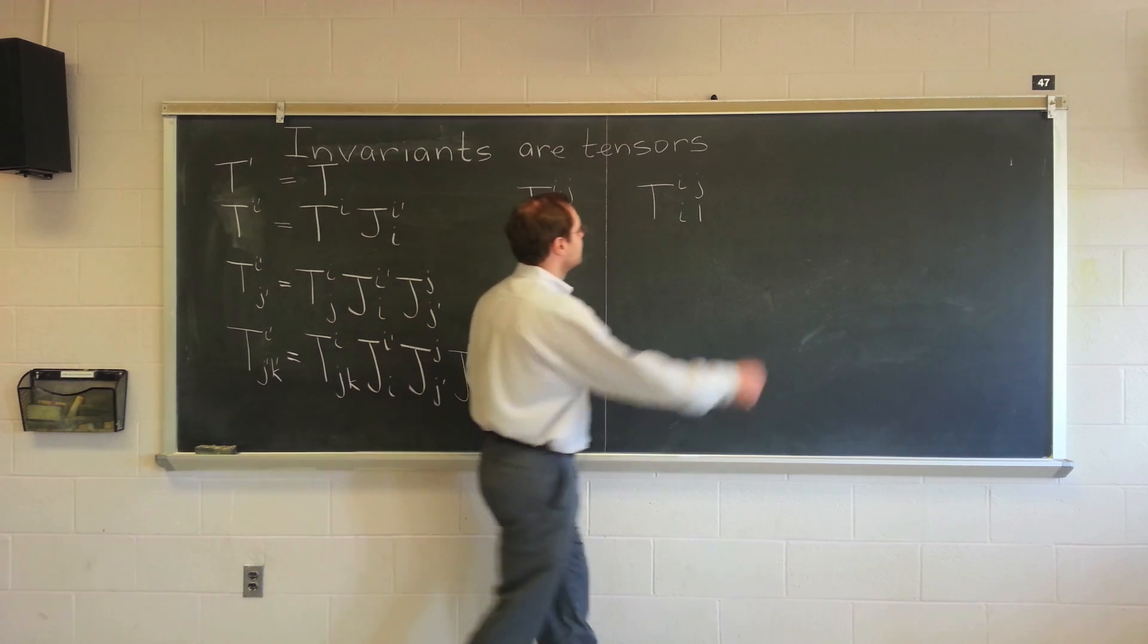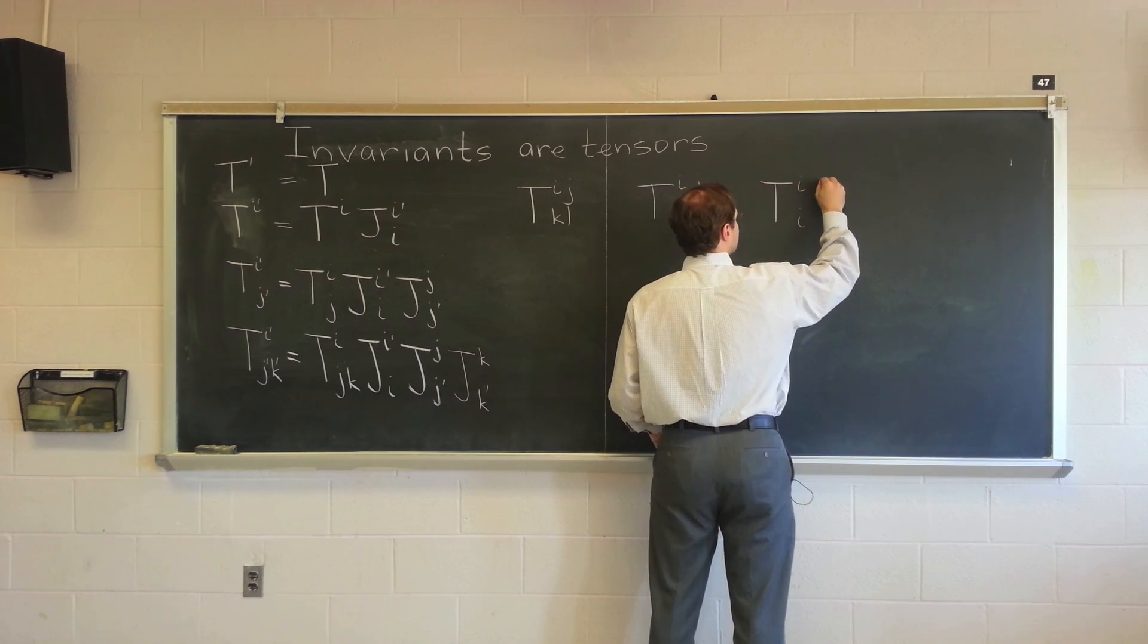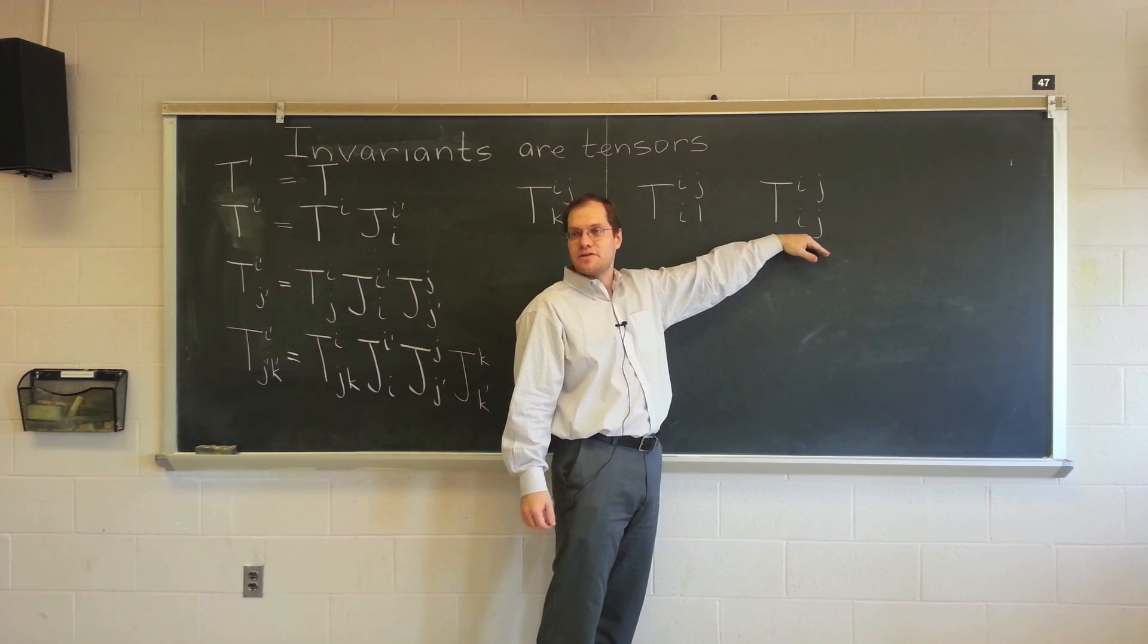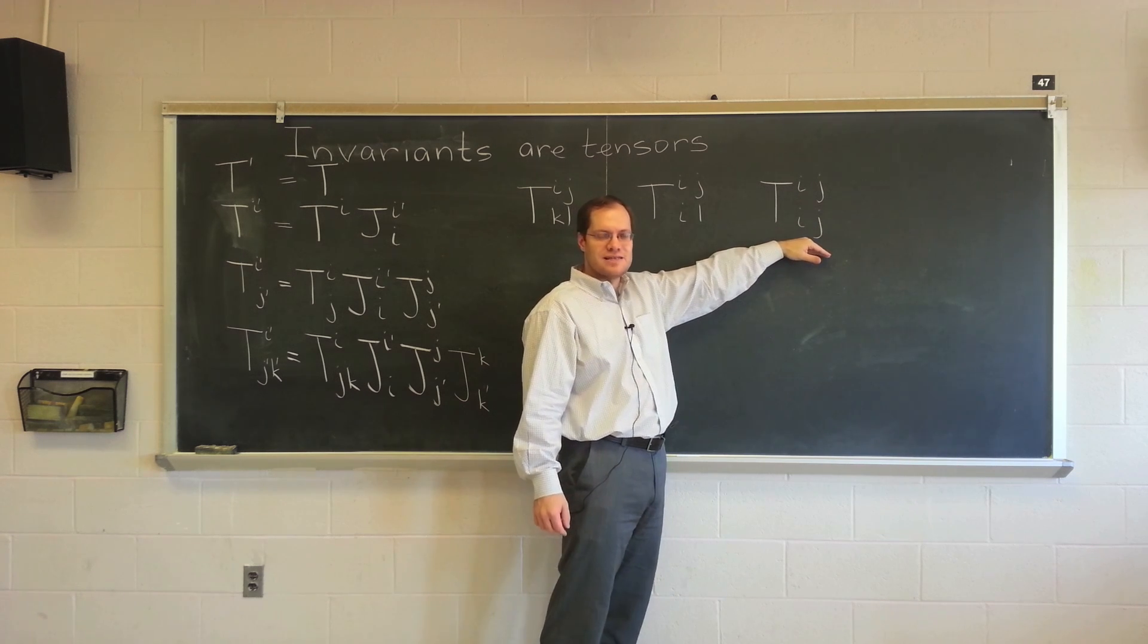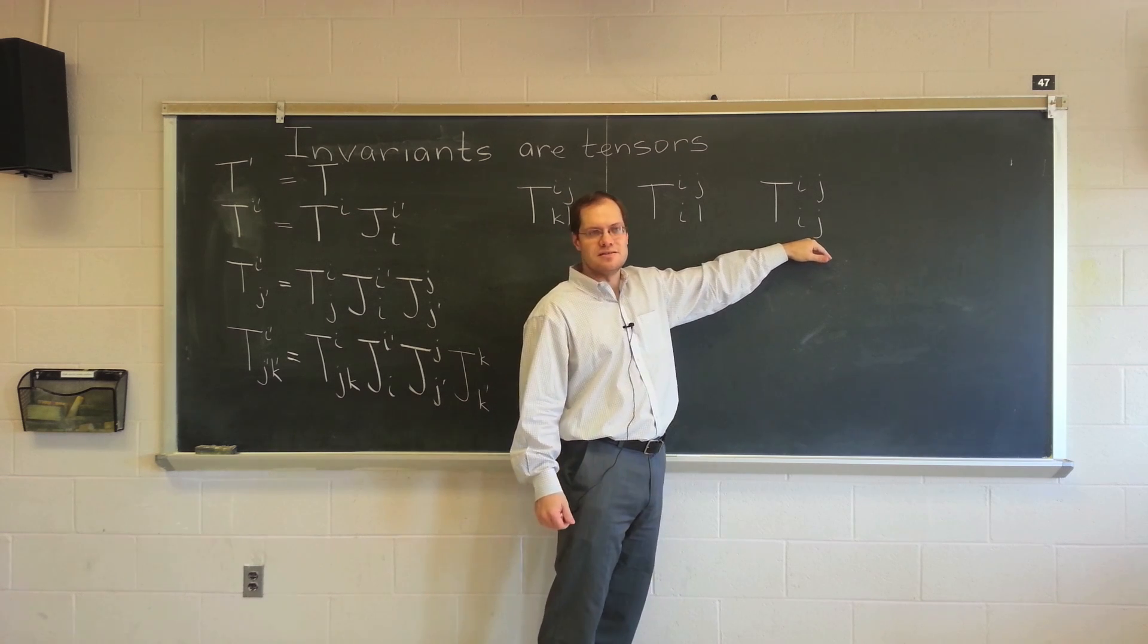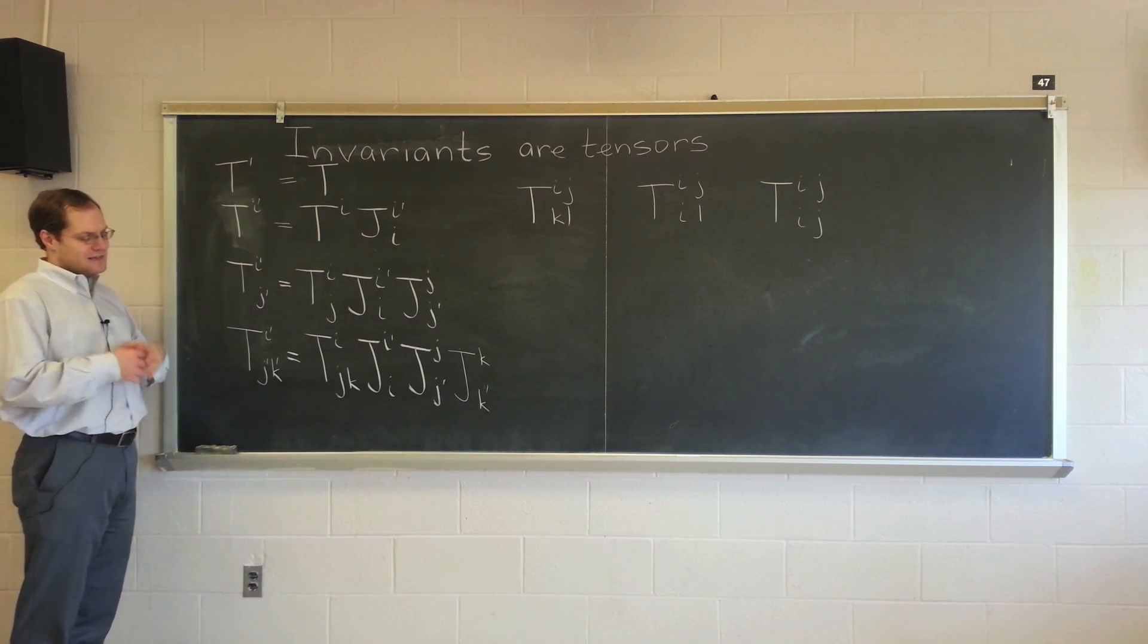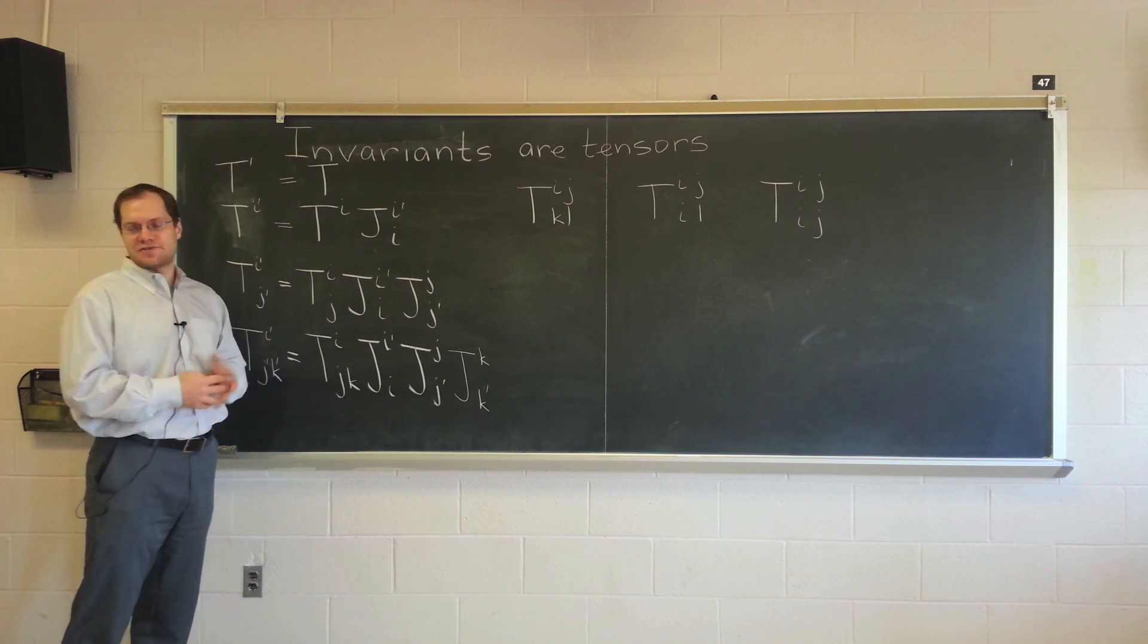And if you now take this object and you contract away the remaining two indices, the result will once again be a tensor. So you can see it as a special case of the same theorem. It's just that it'll be a tensor of order zero. And a tensor of order zero, each index gets its own Jacobian, but there are no indices. So there are no Jacobians.